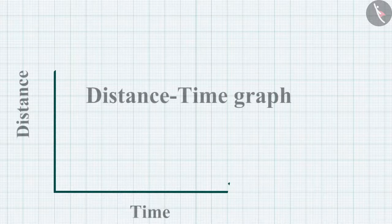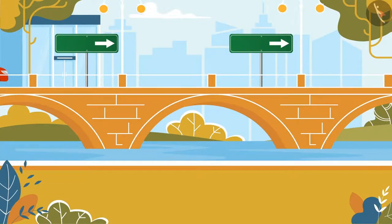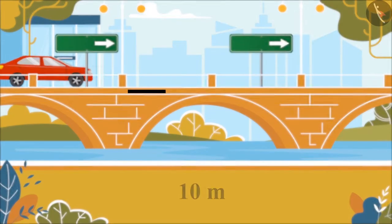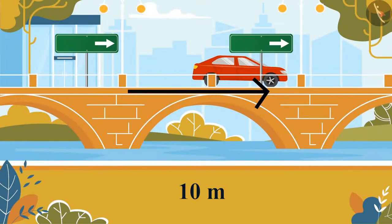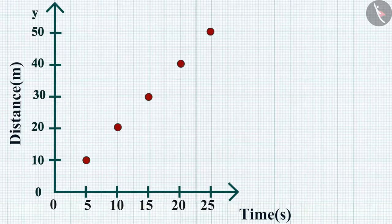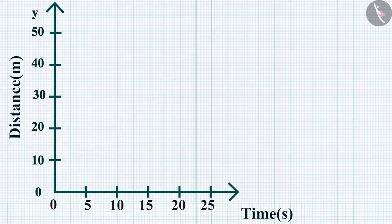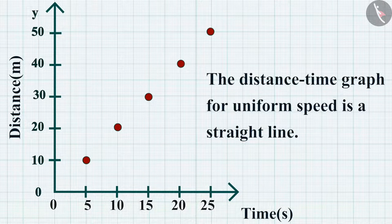Let's start by plotting the graph. Suppose the object covers 10 meters in the first 5 seconds; for the next 5 seconds it covers another 10 meters, and so on. Mark the points on the graph. If you join these points, you can see a straight line passing through the origin. Thus, for uniform speed, a graph of distance traveled against time is a straight line.